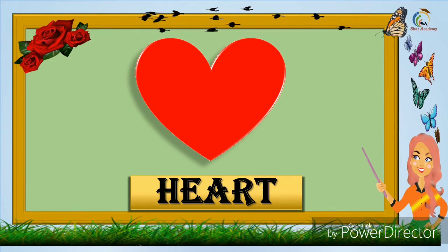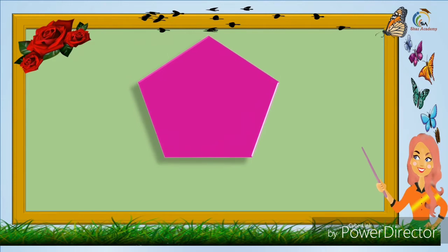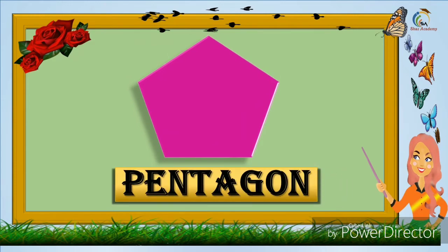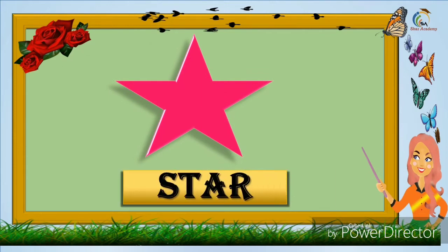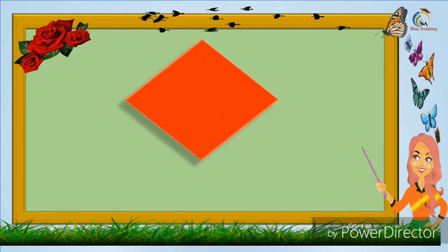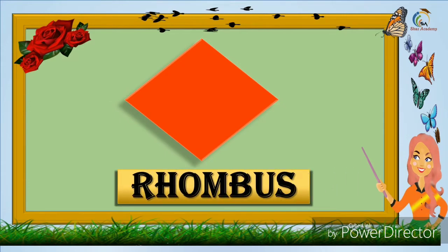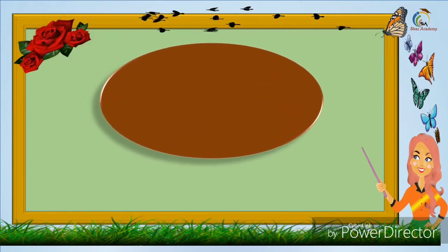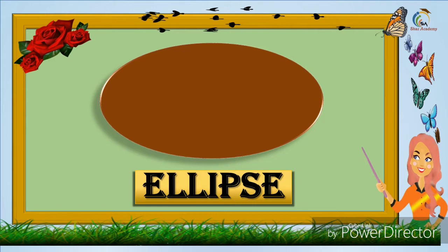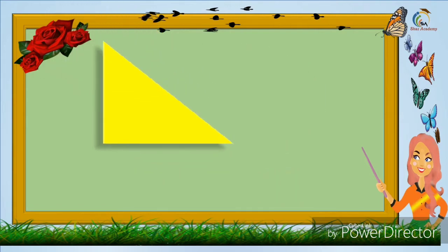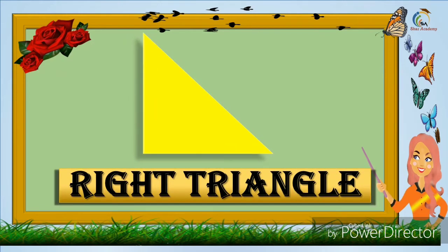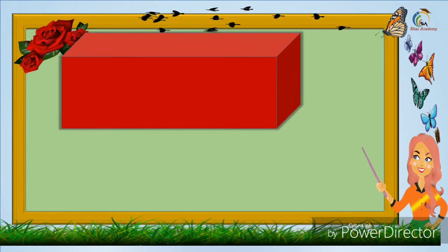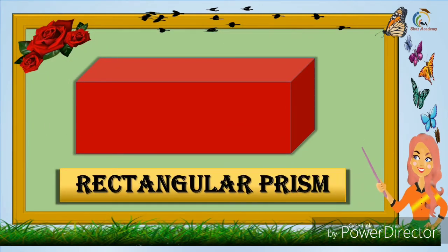Heart. Pentagon. Star. Rhombus. Ellipse. Right triangle. Rectangular prism.